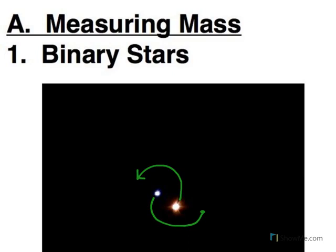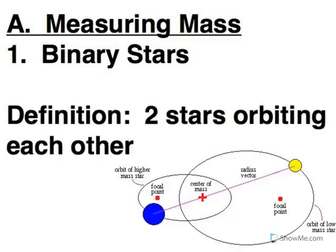A system with two stars orbiting each other is called a binary system. And the two stars are called binary stars. So our definition: two stars orbiting each other. That is the binary system or binary stars.